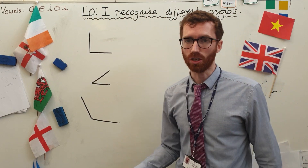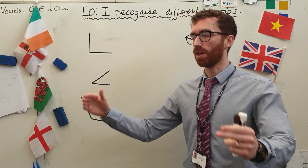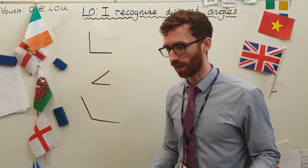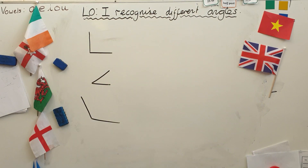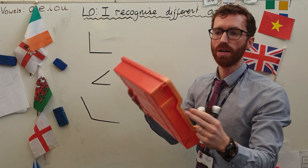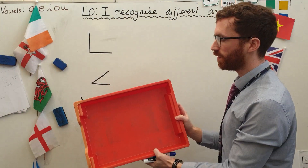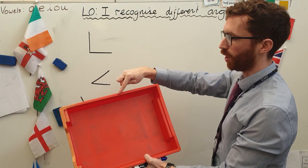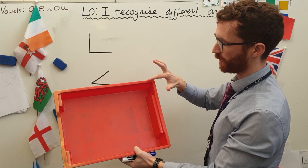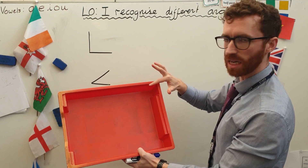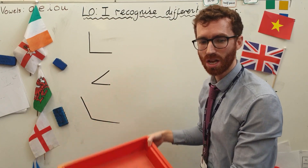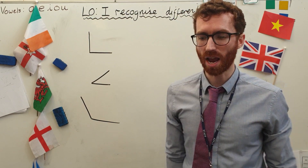An angle is the point where two sides come together. Angles are everywhere. If I pick up this trusty tray of mine, we can see here is an angle. I've got a side and a side come together. This in here is known as an angle. There are angles everywhere.